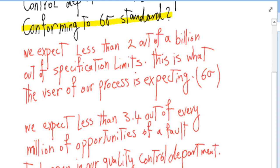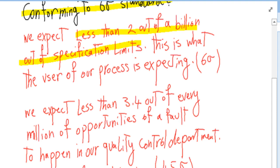In a Six Sigma process, we expect less than two out of a billion products to be out of specification limits. In other words, we expect that less than two out of a billion out of specification limits can be observed by our customers. Two out of a billion is what the user of our process is expecting.